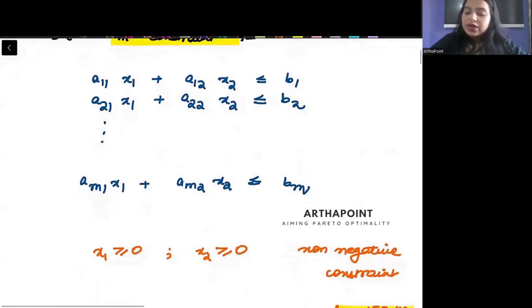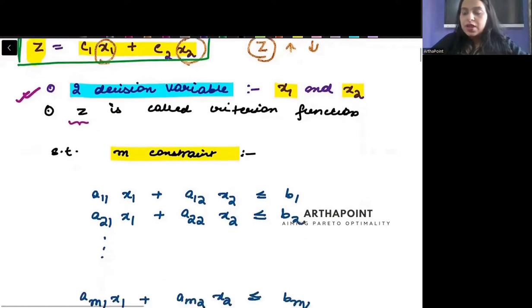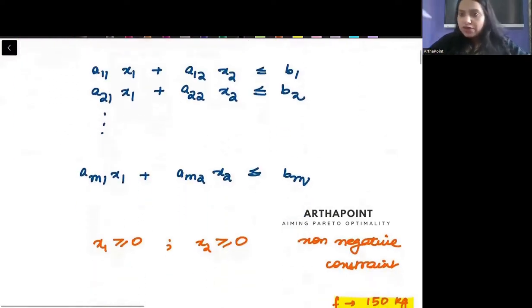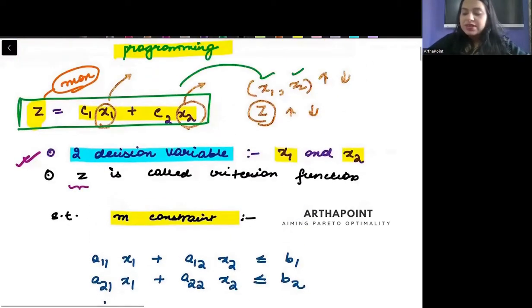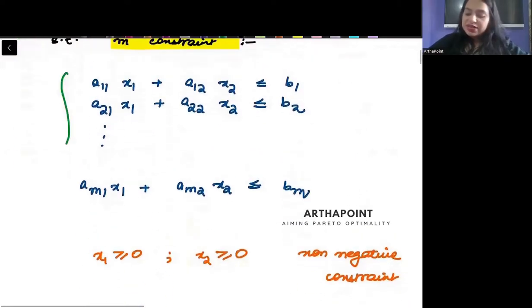This is subject to m constraints. Constraints maane kiya? I want to maximize or minimize this function. But the values of x's that I will get, joe bhi x ki value aygi, that must satisfy these constraints. Usko yeh constraints ko satisfy karna zaruri hai. So you see each constraint is given in terms of x1 and x2. Each constraint is in terms of x1 and x2. But how many constraints are there?